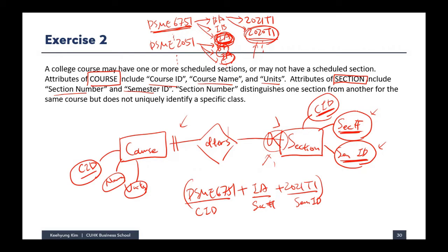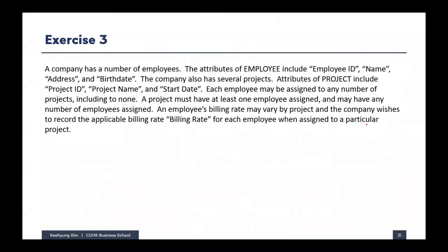Exercise three is about designing a database using an ER diagram to store information about employees and their relationship with projects. We want to keep information about employees, so employee can be an entity storing employee ID, name, address, and birth date. We also have project information: project can be an entity with project ID, project name, and start date as attributes.